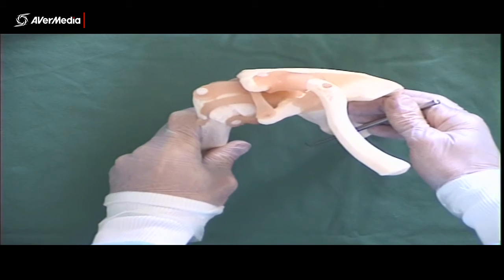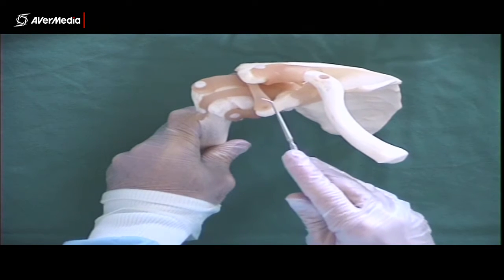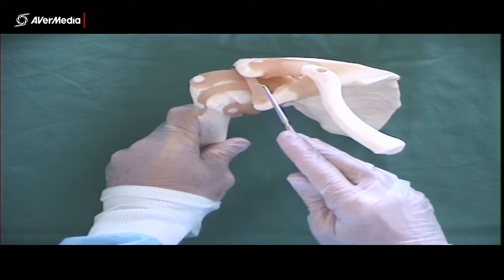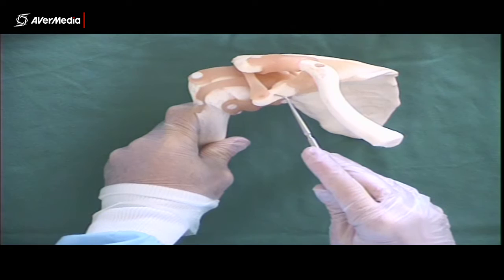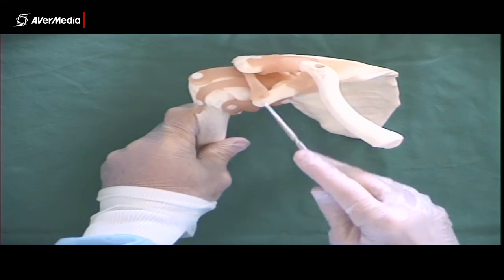So that's the coracohumeral ligament. The coracoacromial ligament is probably easier to spot and easier to identify, because it just goes from the coracoid process to the acromion. So there's the coracoacromial ligament.